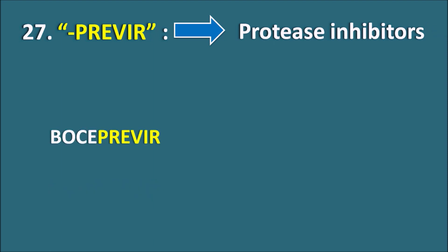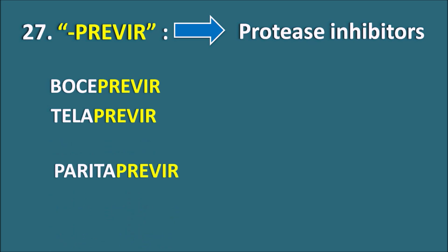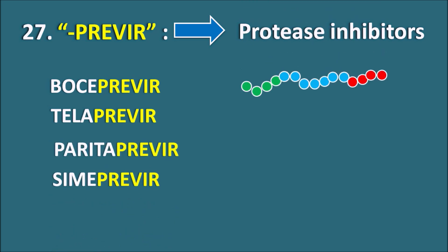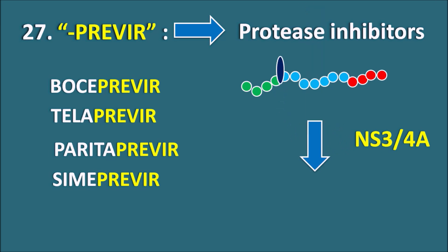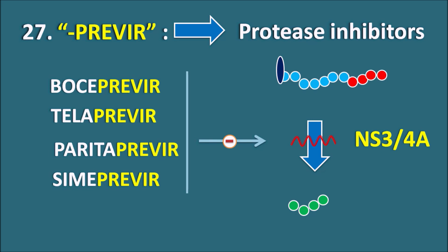The 27th suffix is Previr. Previr indicates they are protease inhibitors. We have drugs like Boceprevir, Telaprevir, Paritaprevir, and Simeprevir. These act on the viral protease enzyme NS3/4A. This protease enzyme acts on the viral polypeptide and cleaves it to release a specific protein. These drugs inhibit the NS3/4A protease enzyme, preventing the release of this protein from the viral peptide. This protease enzyme is present in hepatitis C virus, so these drugs are useful in the treatment of hepatitis C infection.